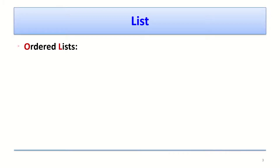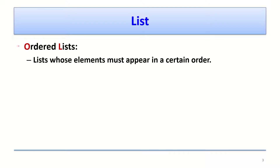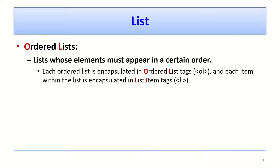The first one is ordered list. An ordered list means a list whose elements appear in a certain order — we can specify the order. That order can be specified using a numbering system. When you insert an ordered list, the tag is OL — O from ordered, L from list. The ordered list contains its items, called list items, and the tag for a list item is LI — L from list, I from item.